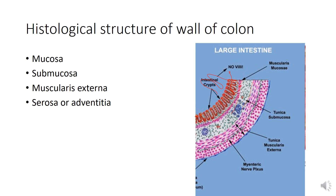The submucosa is the same as in the wall of the small intestine, consisting of dense connective tissue, blood vessels, nerves, lymphatics, and the Meissner's plexus.